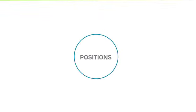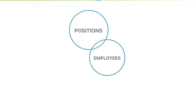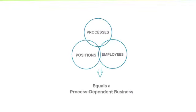To effectively systemize your business, you need to integrate your processes with your positions, the roles on your company's organization chart, and your people. You need to link your processes to specific positions in your organization, and then link your employees to those positions to create position-specific operating manuals. And that is how you'll successfully create a process-dependent business.